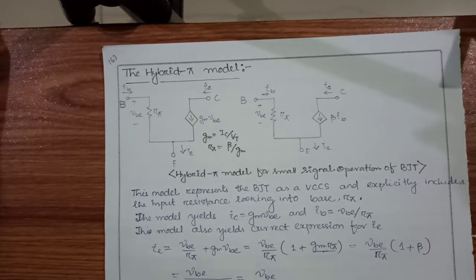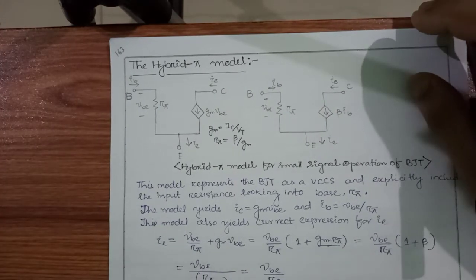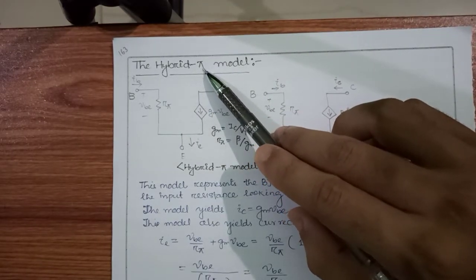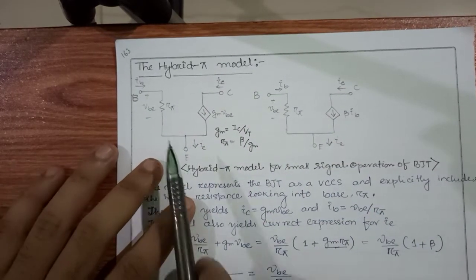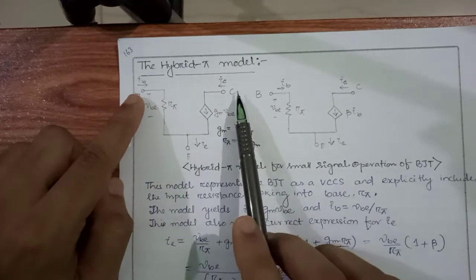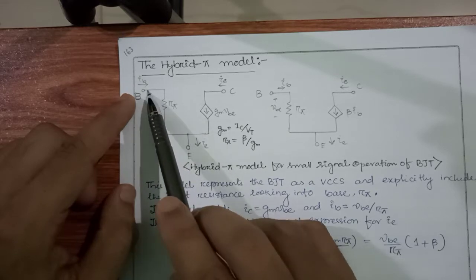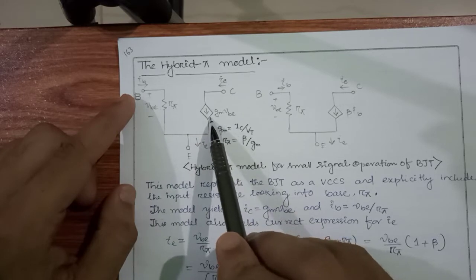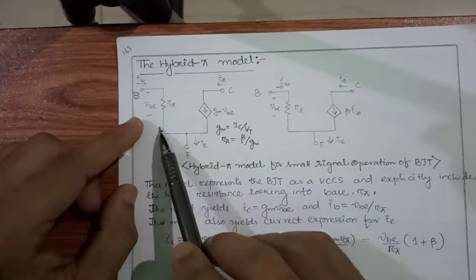In the last video, we have seen the small signal operation using the re model. Today we are going to start the hybrid pi model. This hybrid pi is named after a dependent resistance whose value is r_pi, and that is seen from the base end. This is the hybrid pi model for small signal operation of a BJT. The base terminal, collector terminal, and emitter terminal are identified, and after the base, a resistor r_pi is connected between base and emitter. There is a voltage controlled current source, which is controlled by the voltage V_be between base and emitter.